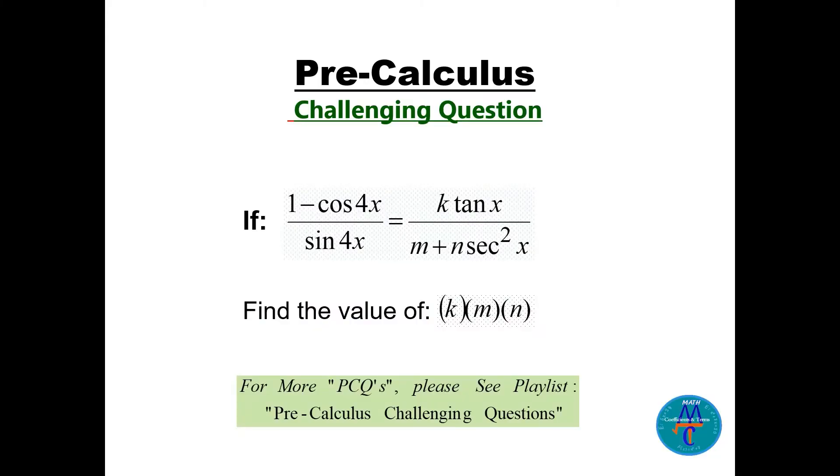How are you my friends? This is another pre-calculus challenging question. If (1 - cos 4x) / sin 4x is equal to k tan x divided by m plus n secant squared x, change the left side to be similar to the right side, then find the value of k times m times n.